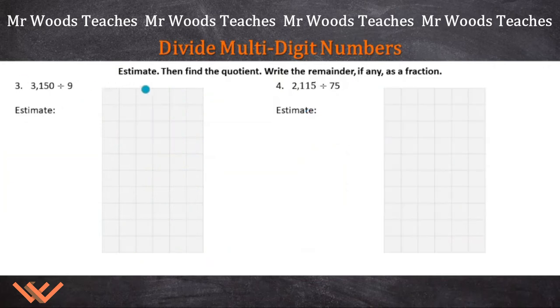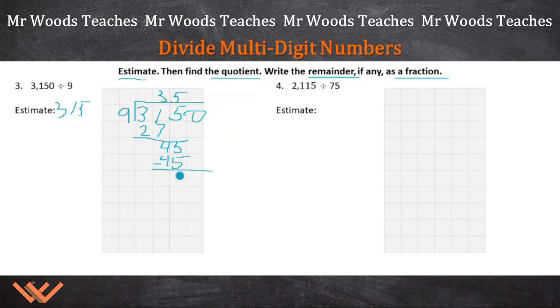Here we continue, same format. So we're going to estimate, find the quotient, write the remainder as a fraction, if any. Let's take a look. So I have 3,150 divided by nine. Let's just set it up. Now here, I would just look at this and say, wait a minute, I'm just going to round this nine up to 10. And I'm going to say it's going to be close to 315 because 10 times 315 is 3,150. Let's get started. So three is in the 100 spot there, is going to give me 27. That's going to give me 45. Five times nine is 45. Subtract that. And again, I get zero, zero, zero. So 350, that's close to my estimate, 35 short of that.